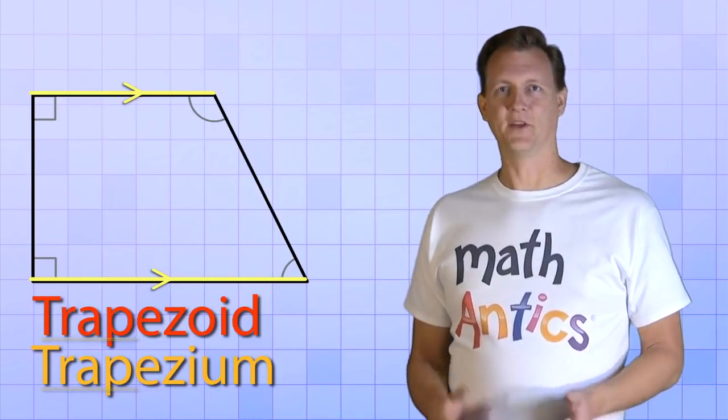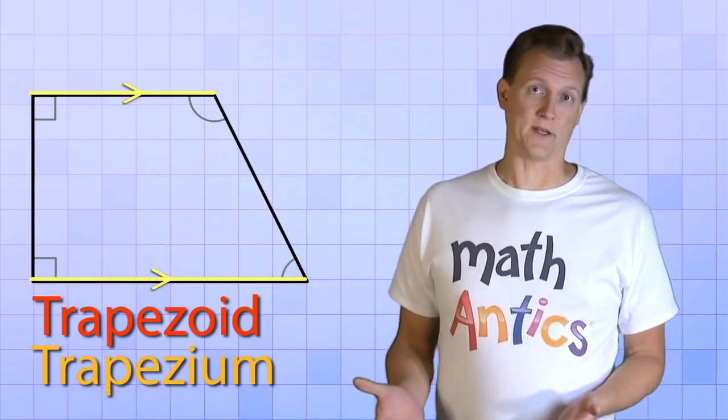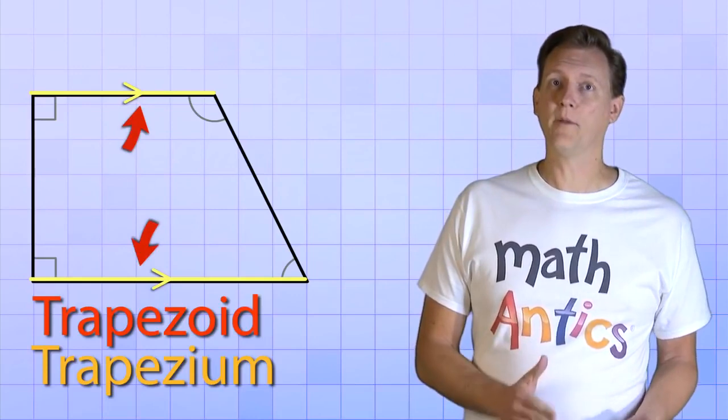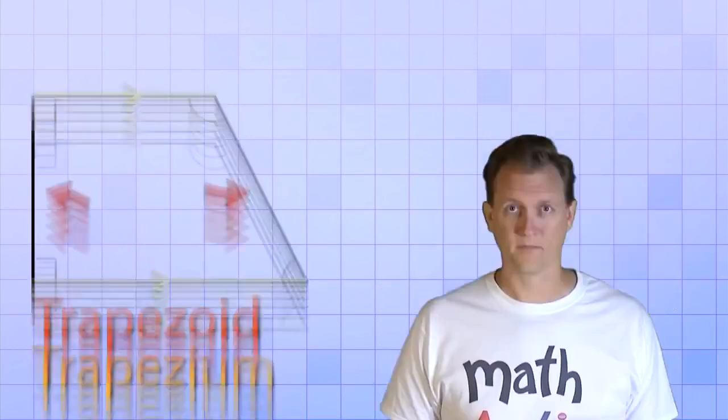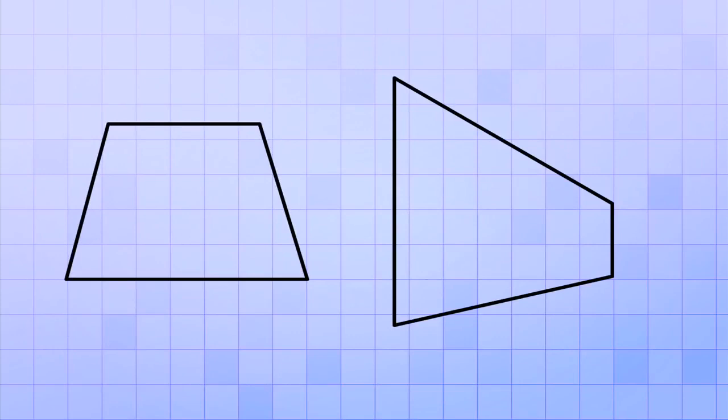Okay, so this quadrilateral is a trapezoid, or trapezium, because it has only one pair of parallel sides, and the other sides are not parallel. Here are a couple more examples of quadrilaterals that have only one set of parallel sides.